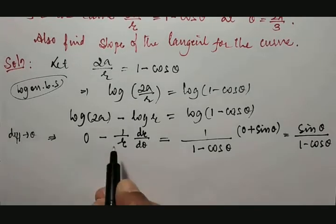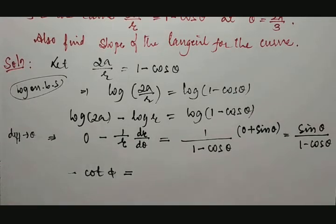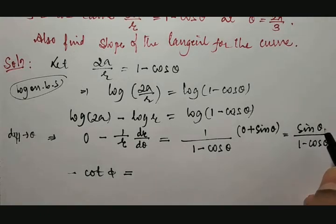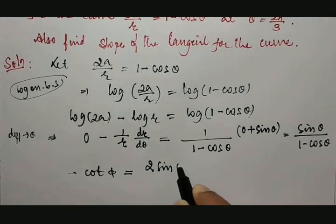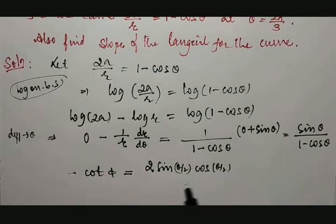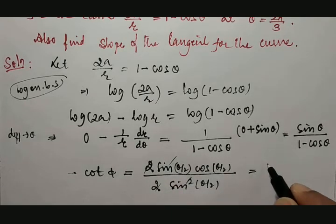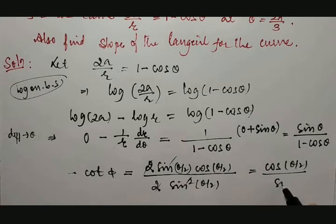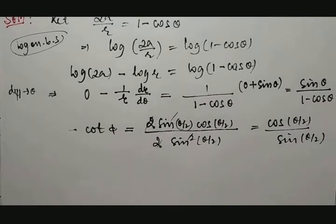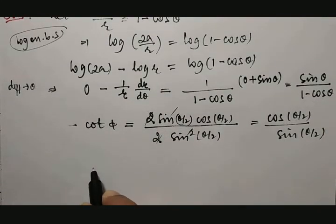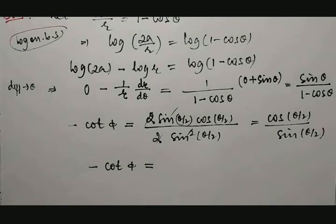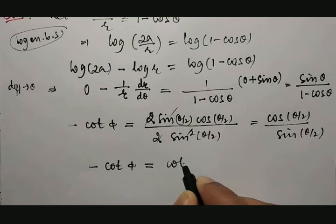So we have −(1/r)(dr/dθ) = sin θ/(1 − cos θ). Using half-angle identities, sin θ = 2 sin(θ/2) cos(θ/2) and 1 − cos θ = 2 sin²(θ/2). The 2 and sin(θ/2) cancel, giving cos(θ/2)/sin(θ/2), which is cot(θ/2). Therefore, −(1/r)(dr/dθ) = cot(θ/2).